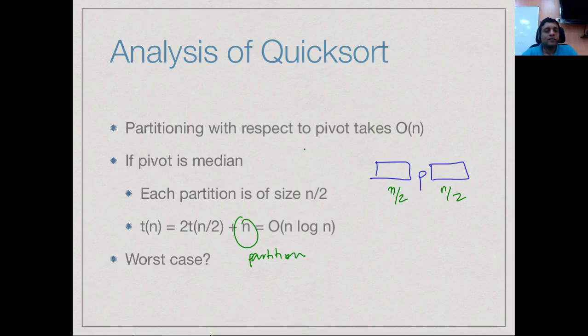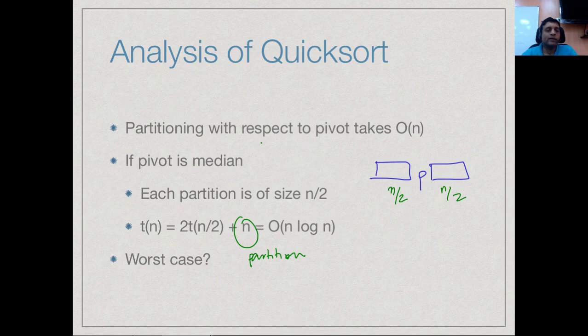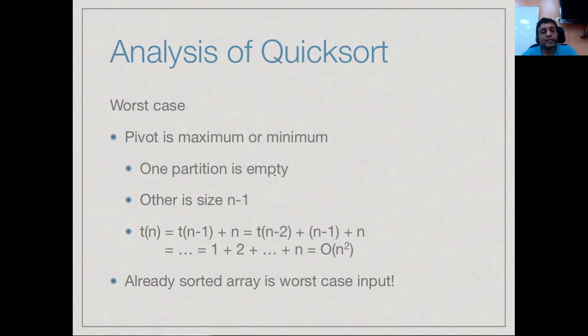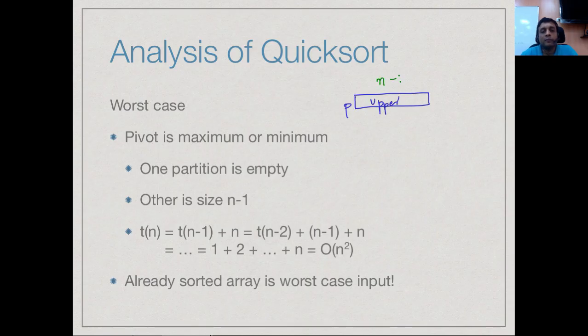But the pivot is in some sense the best case. What is the worst case? The worst case is when the pivot is an extreme value, either the smallest or the biggest. If it is the smallest value, everything will be bigger than the pivot, so you have an upper element set with n minus 1 values because the pivot is the smallest, and nothing on the other side.